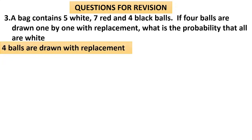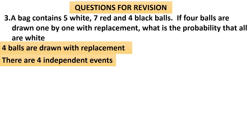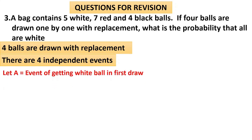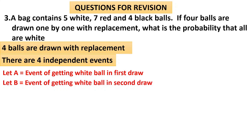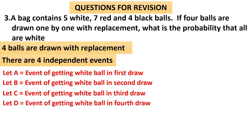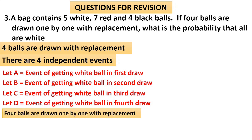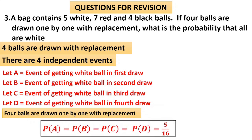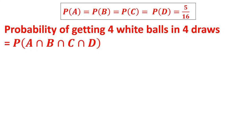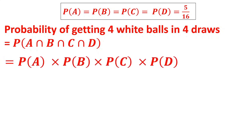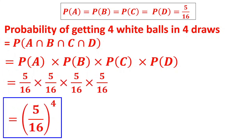Four balls are drawn with replacement, so there are four independent events. A is the event of getting a white ball in the first draw, B in the second, C in the third, and D in the fourth — some books call them W1, W2, W3, W4. Since balls are drawn with replacement, P of A = P of B = P of C = P of D = 5/16, as there are five white balls and sixteen total. The probability of getting four white balls in four draws is A intersection B intersection C intersection D = P of A into P of B into P of C into P of D = (5/16) to the power four.